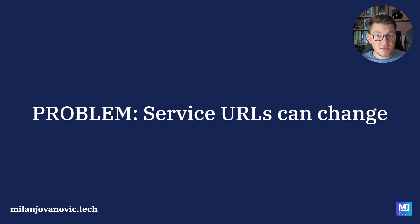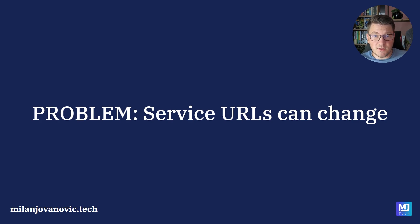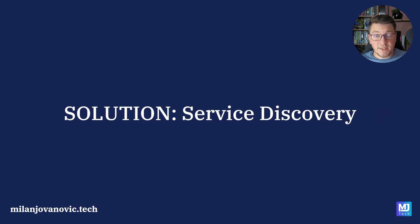So let's define our problem: service URLs can change over time. Let's say we scaled the product service out to 10 instances — those are 10 physical addresses we need to know how to reach. We could solve this by introducing a load balancer in front to route requests to available services, but then the load balancer also needs to know the physical addresses of those downstream services. What could also happen is one service going down and being replaced with a new one at a different physical address. A very interesting way to solve this is service discovery.